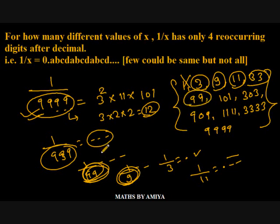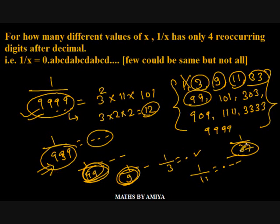For example, what is the meaning of 1 upon 37? 37 is a factor of 999, so 1 upon 37 would give 3-digit reoccurring. So we want factors of 9999 but do not want factors of 999, 99, or 9.